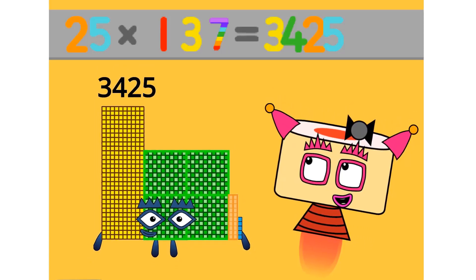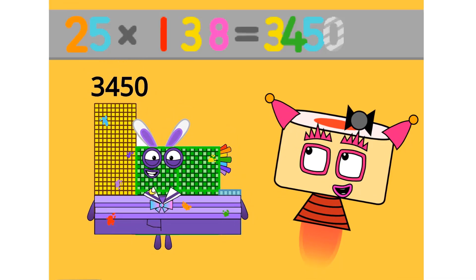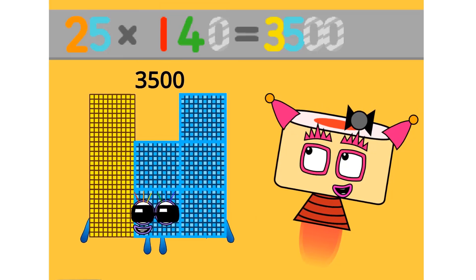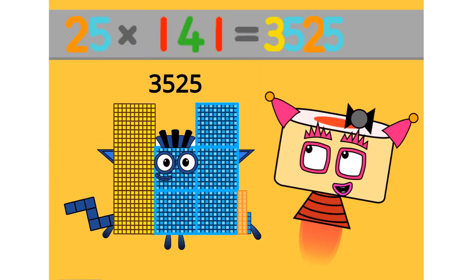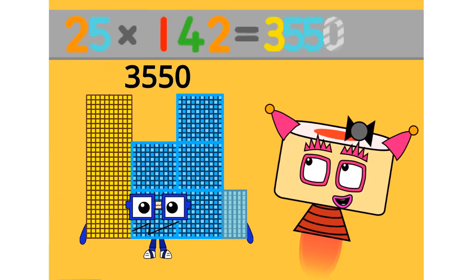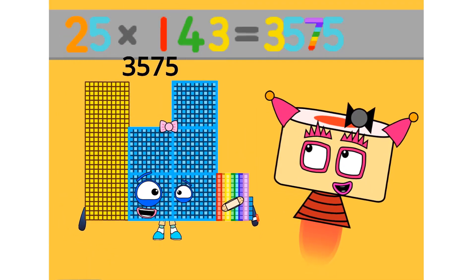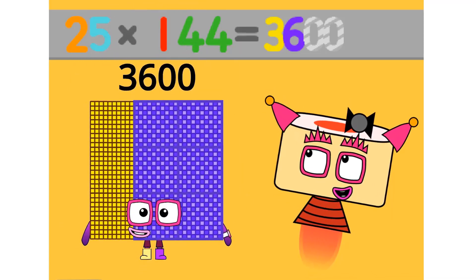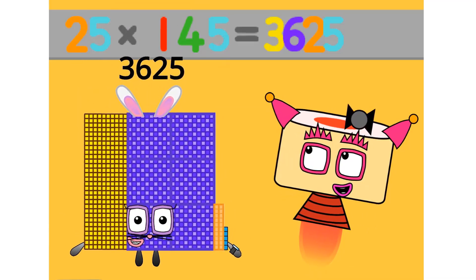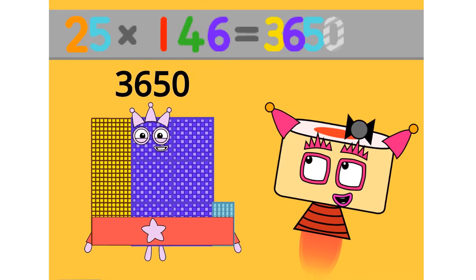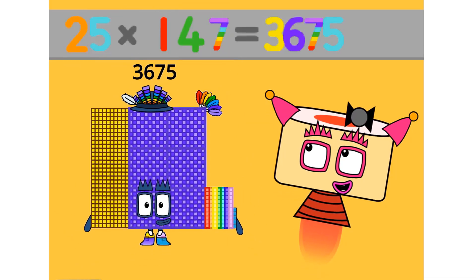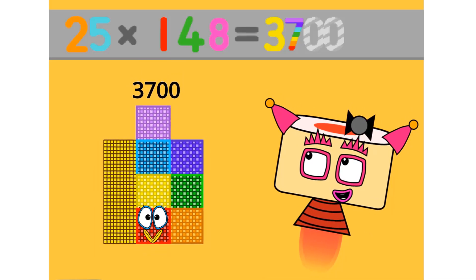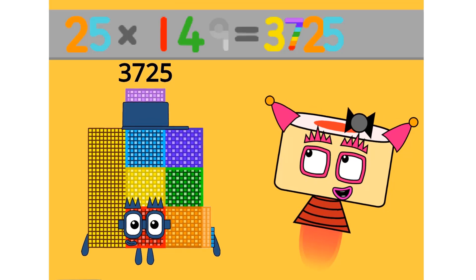25 times 137 equals 3425. 25 times 138 equals 3450. 25 times 139 equals 3475. 25 times 140 equals 3500. 25 times 141 equals 3525. 25 times 142 equals 3550. 25 times 143 equals 3575. 25 times 144 equals 3600. 25 times 145 equals 3625. 25 times 146 equals 3650. 25 times 147 equals 3675.